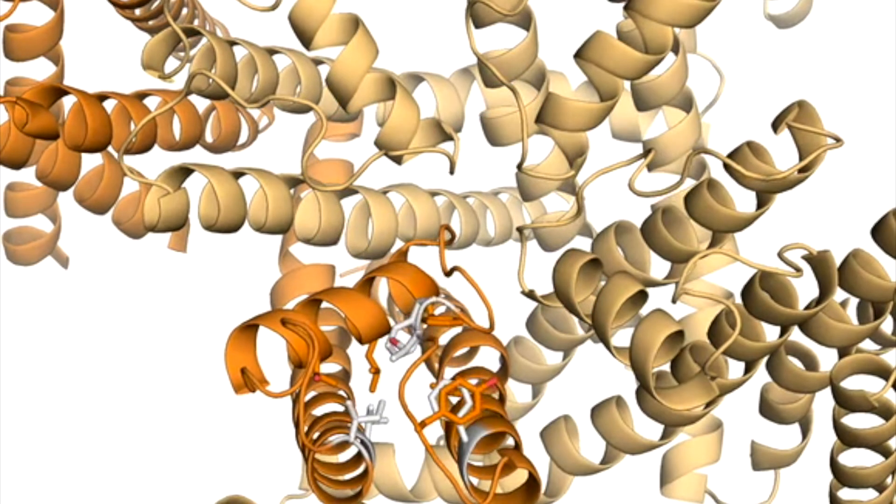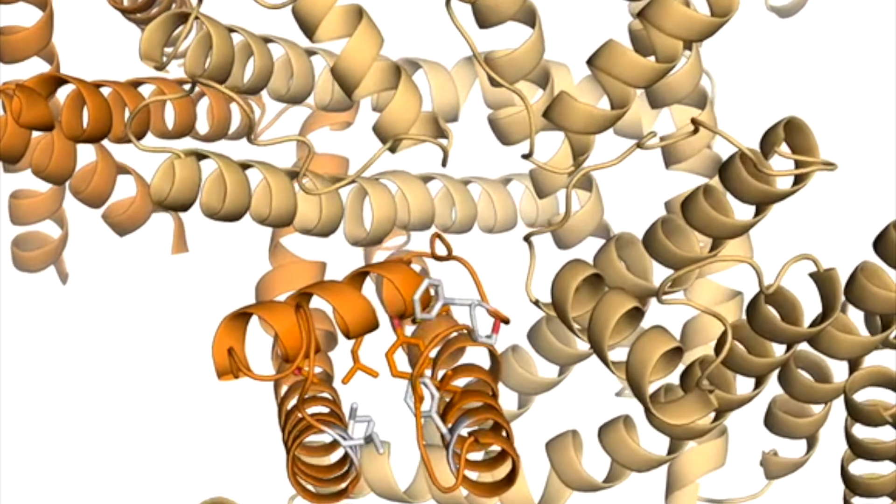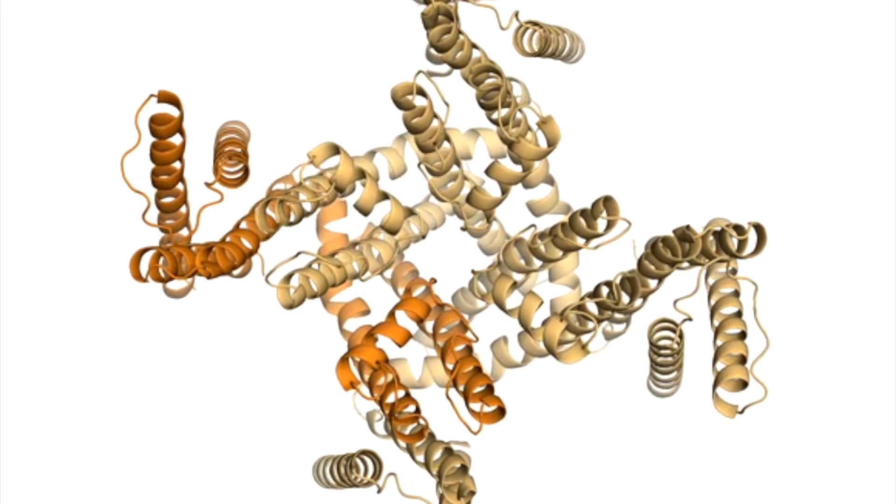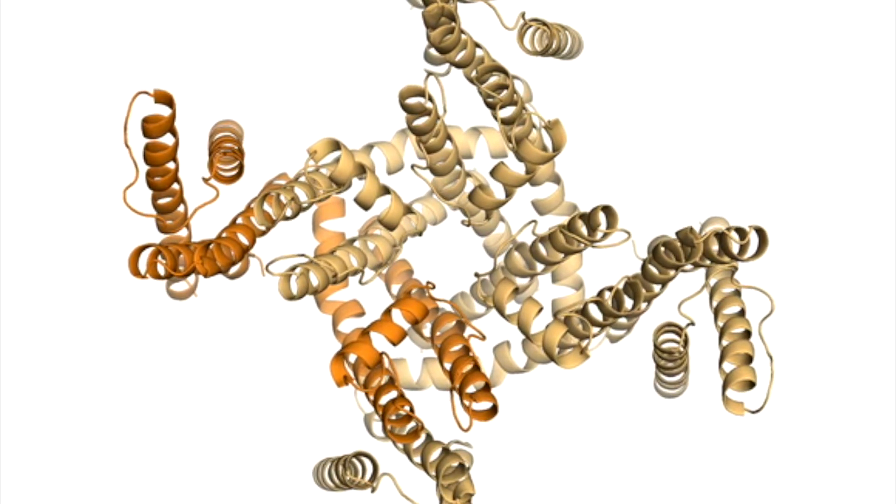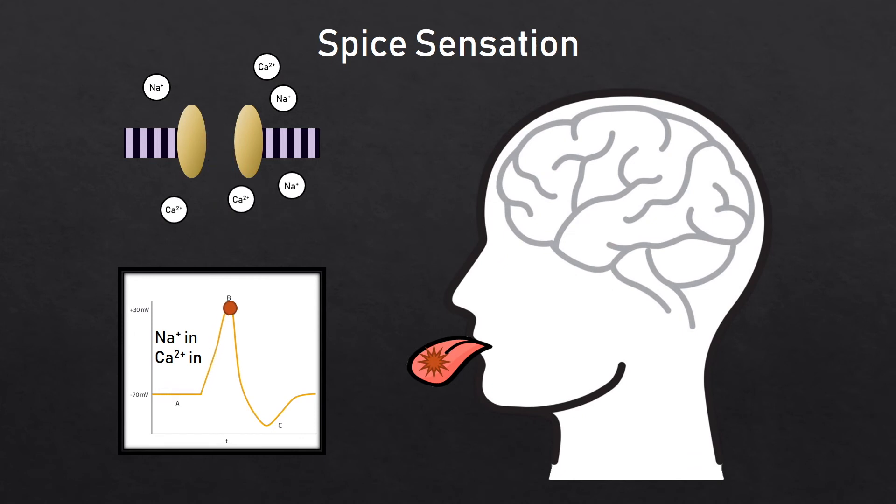This motion exposes hydrophobic residues on S5, S6, and the P-loop that form the selectivity filter, causing it to dilate. Sodium and calcium ions flow in and depolarize nociceptive neurons, creating action potentials that travel to the brain and cause the sensation of pain.